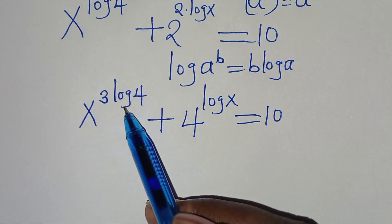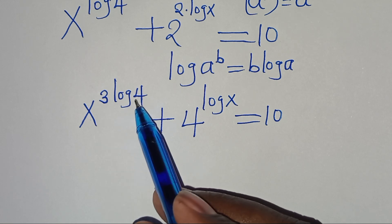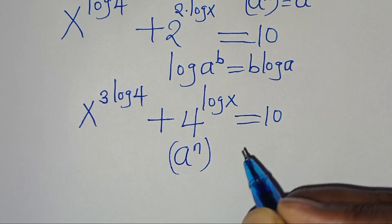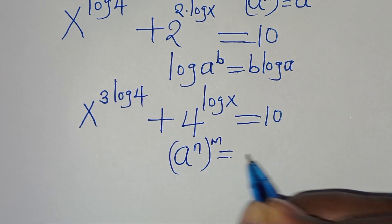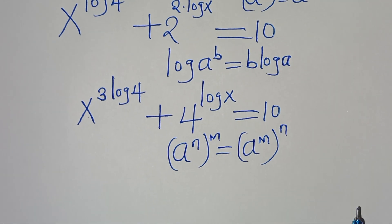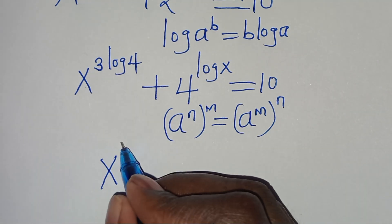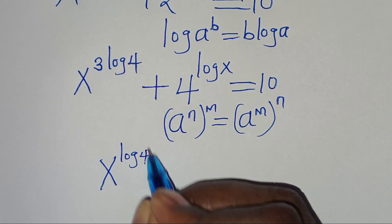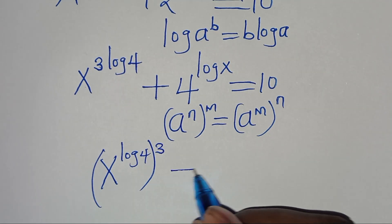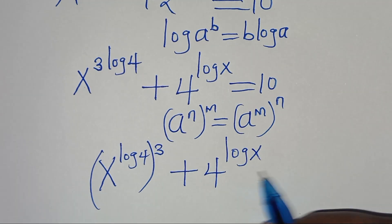Now the next step: we have x to the power of 3 multiplied by log 4. This is in the form of a to the power of n raised to the power of m, which we can express as a to the power of m raised to the power of n. So we have x to the power of log 4, raised to the power of 3, then plus 4 to the power of log x, this is equal to 10.